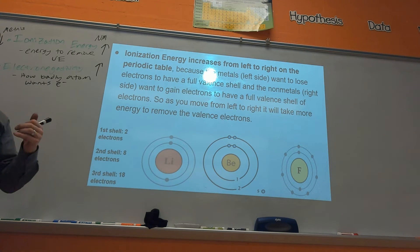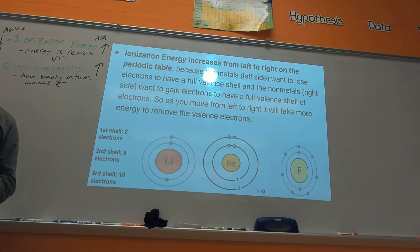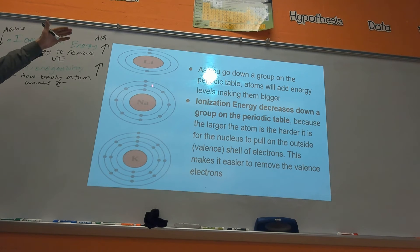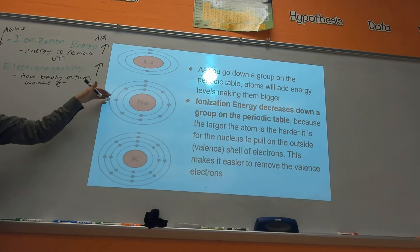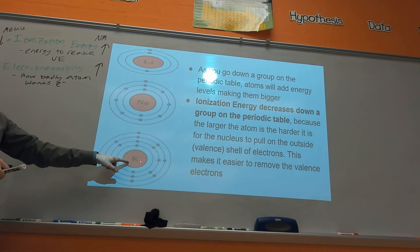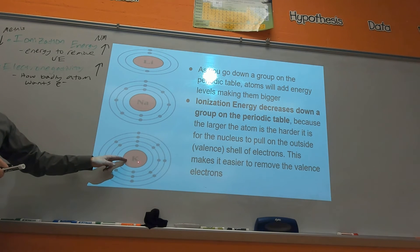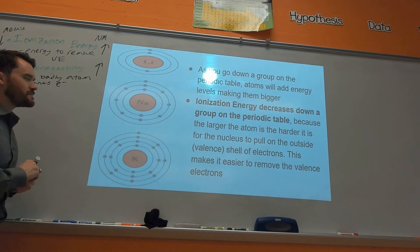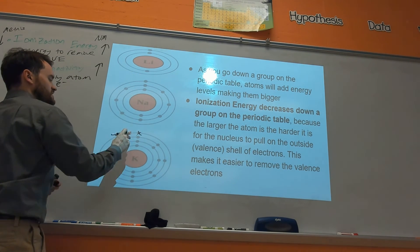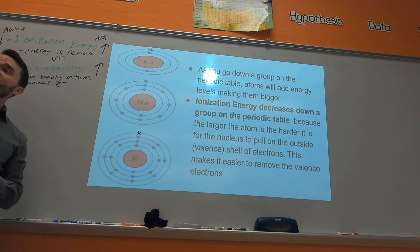You don't have to blindly memorize these trends — they make sense if you understand what's going on with the Bohr models. As you go down a group, ionization energy decreases for the same reason as electronegativity: the bigger you are as an atom, the harder it is for the nucleus to pull on those outer valence electrons. For potassium it's easier to pick off the outer valence electron than for lithium's — just like if you're in the back of the classroom it's easier to goof off than if you're right in front of the teacher.